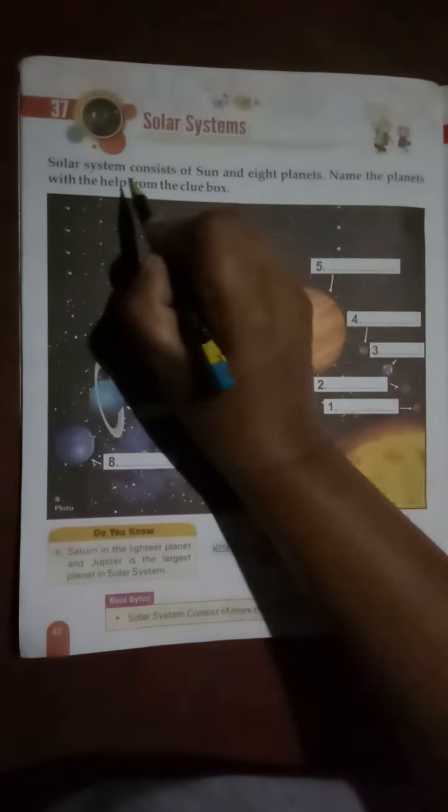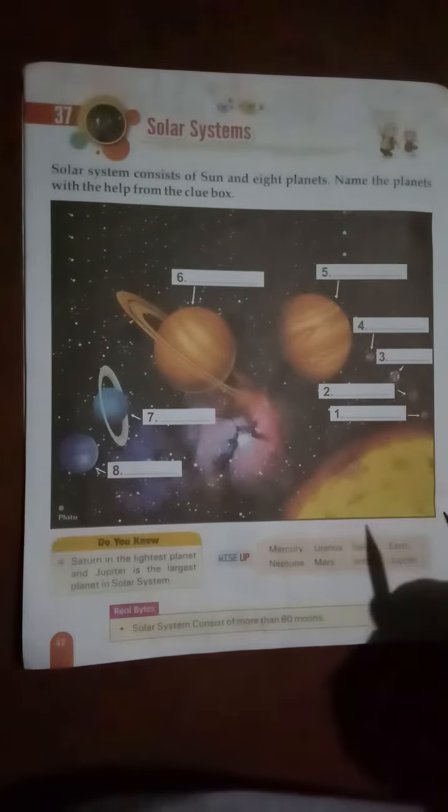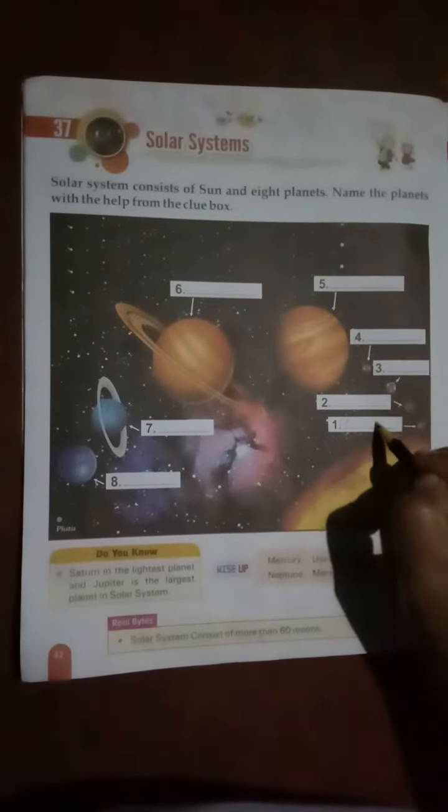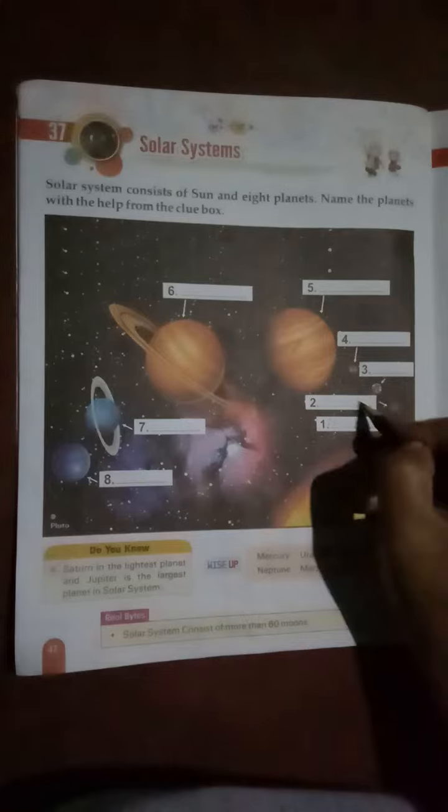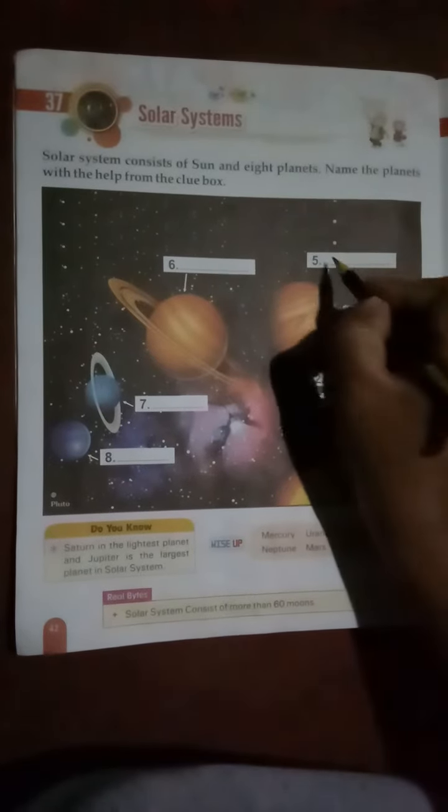Solar system consists of Sun and eight planets, children. Now let us name these planets. Okay, number one: Mercury. Two: Venus. Three: Earth. Four: Mars. Five: Jupiter.